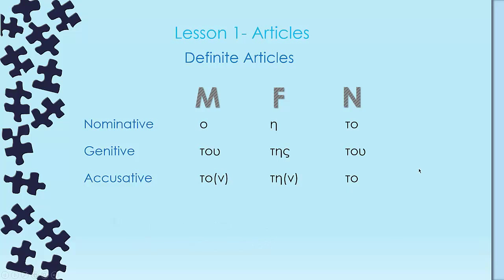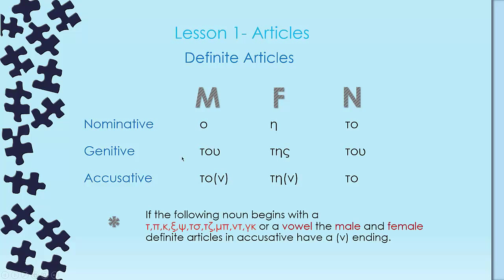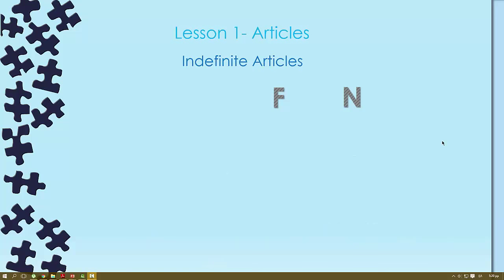Now I want to clarify some things about the accusative of male definite articles and female definite articles. If the following noun begins with a vowel, the male and the female definite articles in accusative have a ν ending. So we would say τον Κώστα, την Ελένη, but we are going to say το φίλο and τη φίλη.